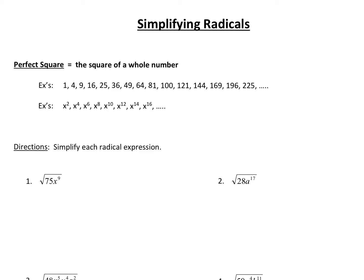Hello, so we're going to be talking about two different things today. The first thing we're going to be talking about is simplifying radicals. Now all of these right here are perfect squares that we're familiar with. So for example, the square root of 16 is 4 because 4 times 4 gives you 16. The square root of 49 is 7 because 7 times 7 gives you 49.